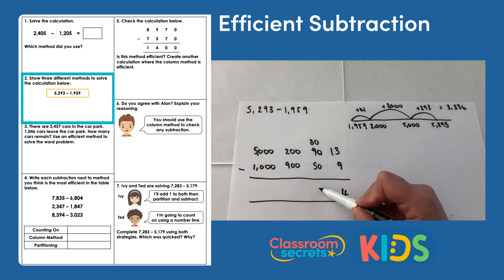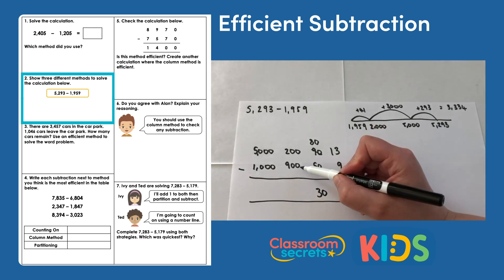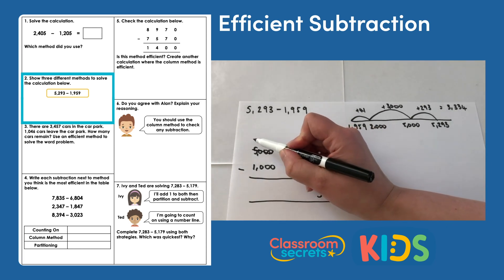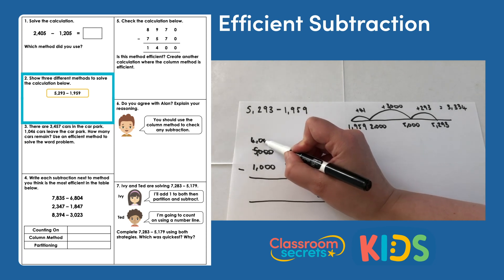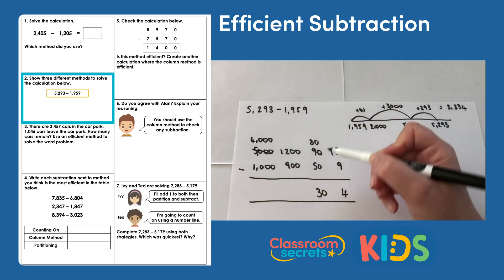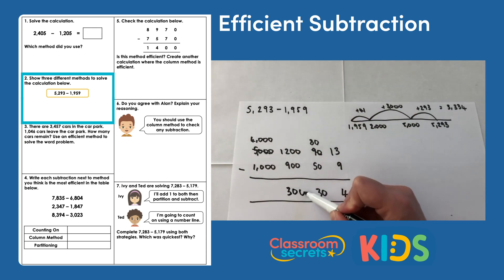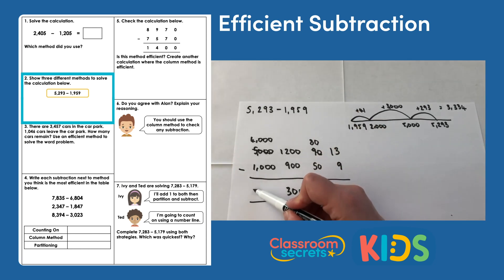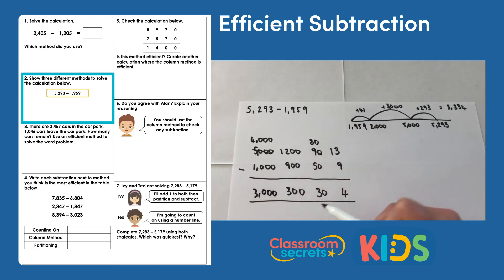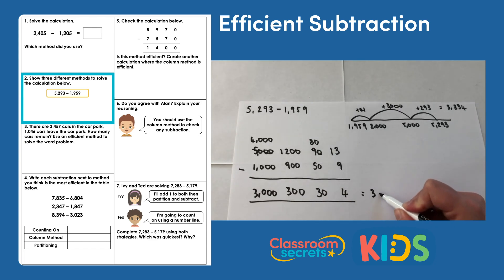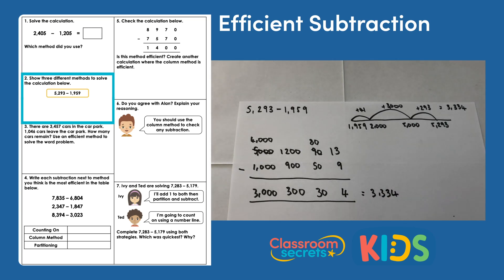Eighty take away fifty is thirty. Two hundred take away nine hundred we can't do, so we exchange again, leaving us with three hundred. Then four thousand take away one thousand is three thousand. This brings our answer to three thousand three hundred and thirty-four — the same answer as before.